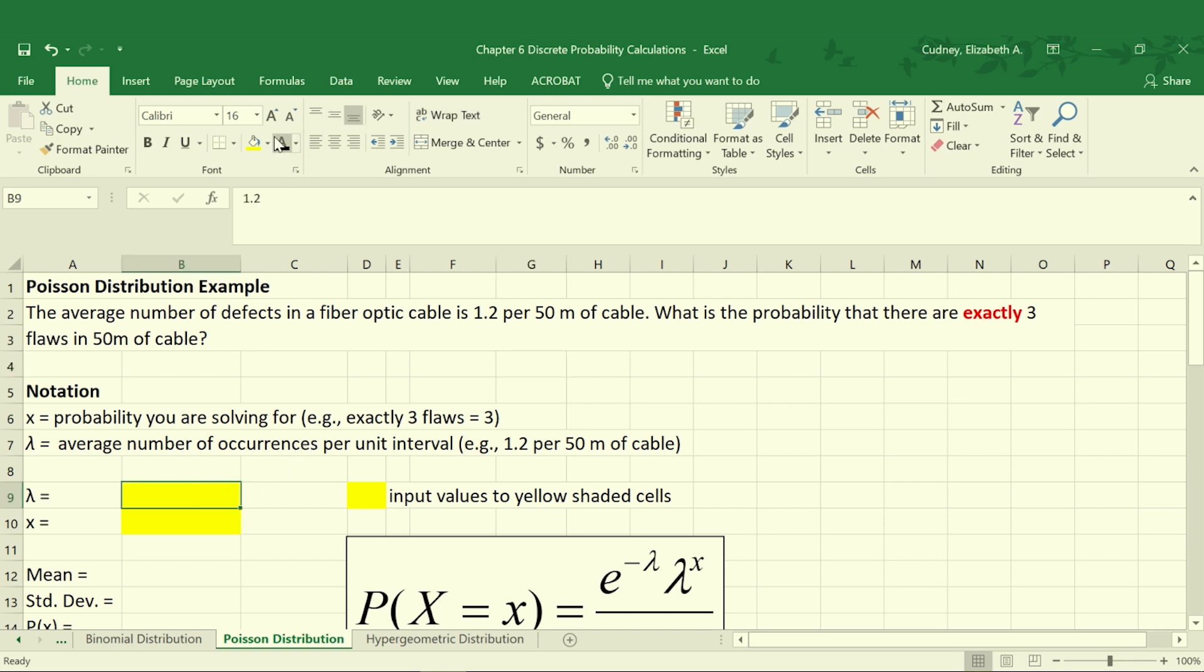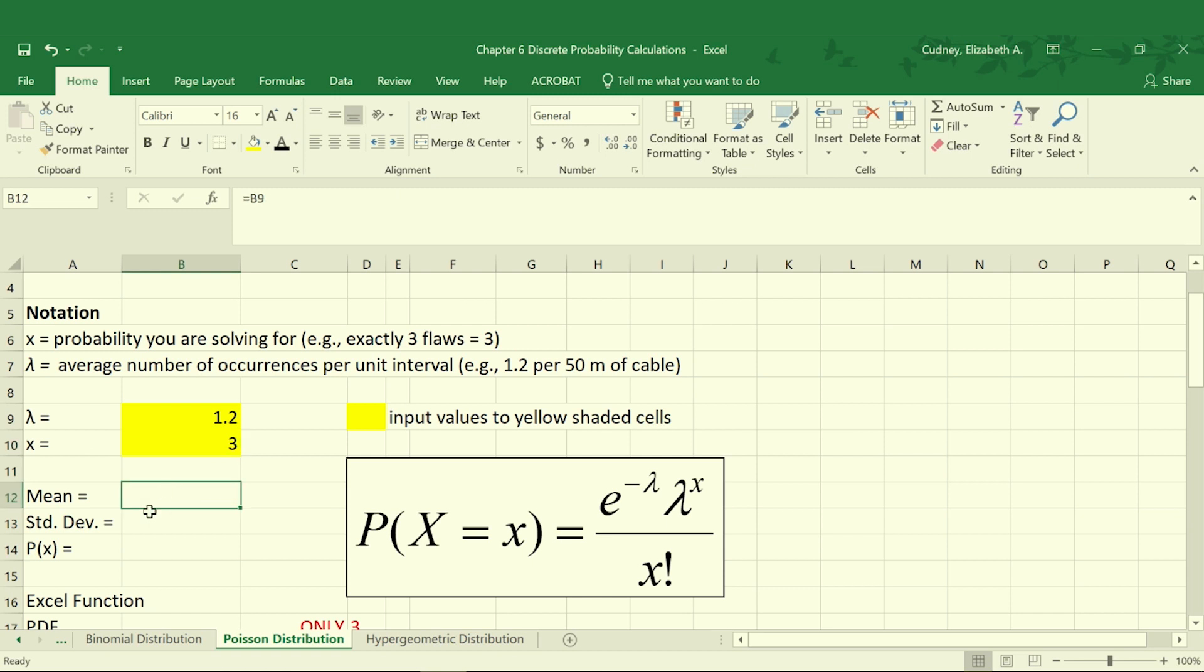Our lambda value is 1.2. And then we're looking for the probability of exactly three defects, so our x value is 3. And in this example, to make sure that there's no mistakes in typing in the formula as I do this, I already have all the formulas typed in. And you'll see me changing the font color.